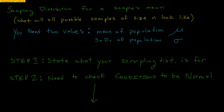Basically, we're talking about what all possible samples of size n look like. We need two values: the mean of the population, which we call mu, and the standard deviation of the population, which we call sigma. For example, somewhere out there is the true average weight of a high school boy, and that would be mu.